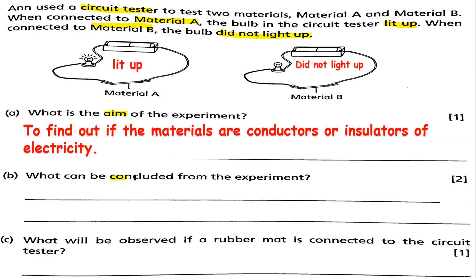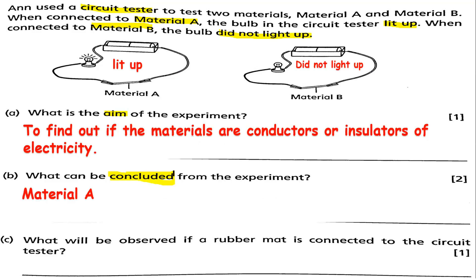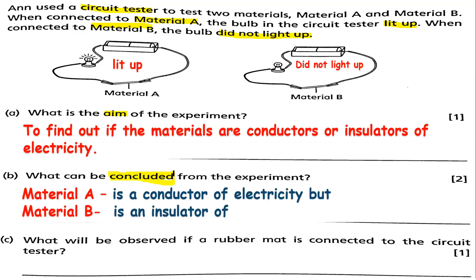Letter B: What can be concluded? The conclusion from the experiment is that material A is a conductor of electricity, but material B is an insulator of electricity. That is the result of this experiment — what we learned from doing this kind of experiment with a circuit tester.